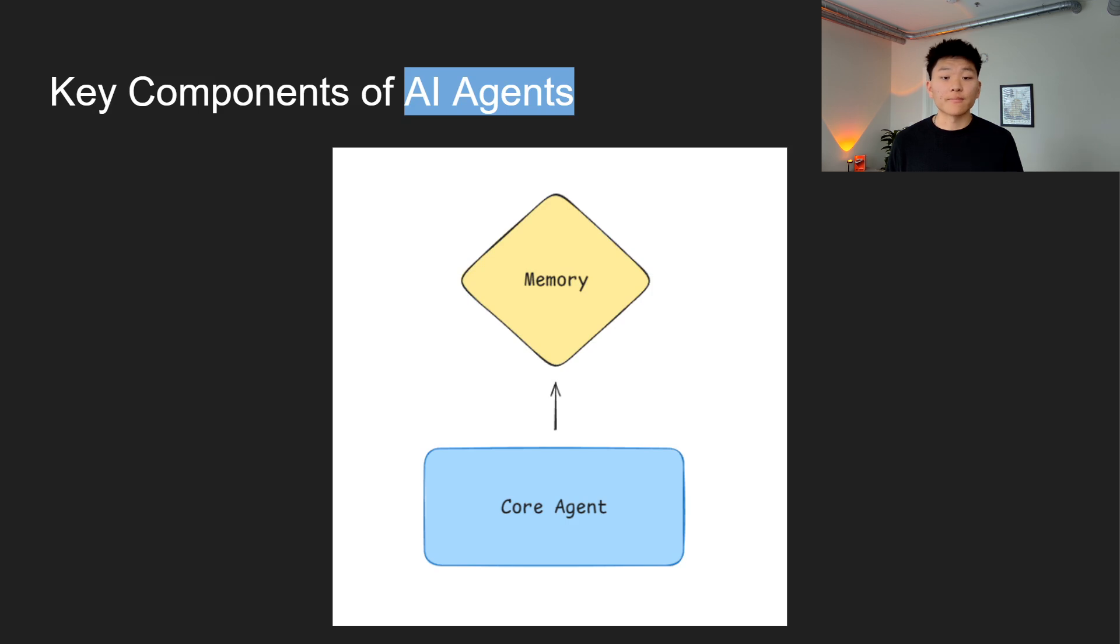Next we have memory. This is really a game changer because the memory is what allows the agent to store and retrieve information so that it can maintain context and continuity over time, which means that the agent doesn't have to start from scratch every time it tackles a new task. Imagine you have an assistant that can remember every single detail of your last conversation and previous conversations. That's what the memory is going to do.